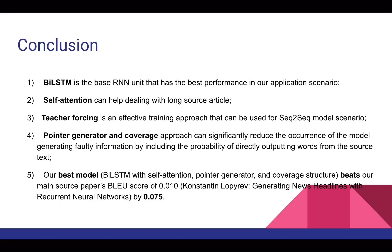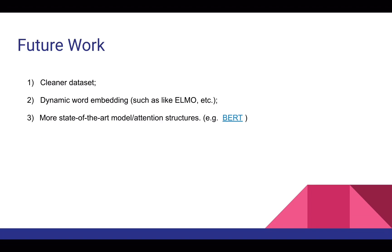In conclusion, BiLSTM, self-attention, teacher forcing, pointer generator, and coverage are all proven to be effective approaches to help us improve the abstractive text summarization performance in different aspects. As a result, our best model beats our main source paper's BLEU score. If given more time, preparing a cleaner dataset, using dynamic word embeddings like ELMo, and trying more model structures are definitely worth trying.